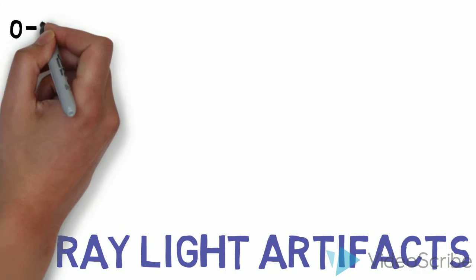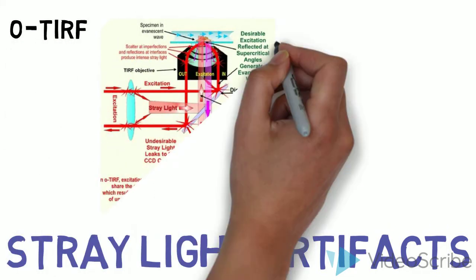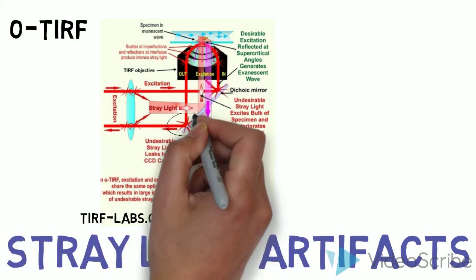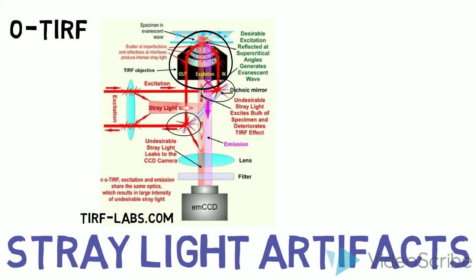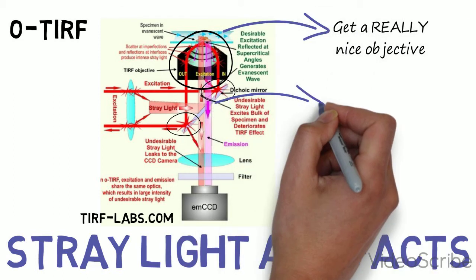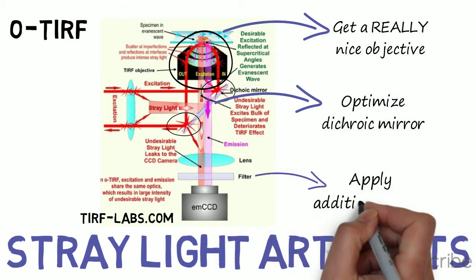O-TIRF, on the other hand, is more prone to stray light. The figure here identifies several sources in the O-TIRF setup that can contribute to significant stray light interference. This can be minimized by optimizing the optics, particularly the objective lens and the dichroic mirror. Additional filters can also help remove the excitation wavelength and scattering.